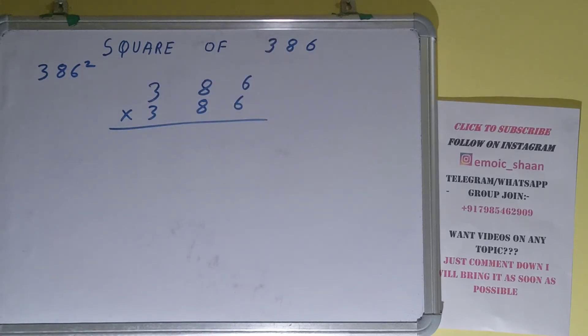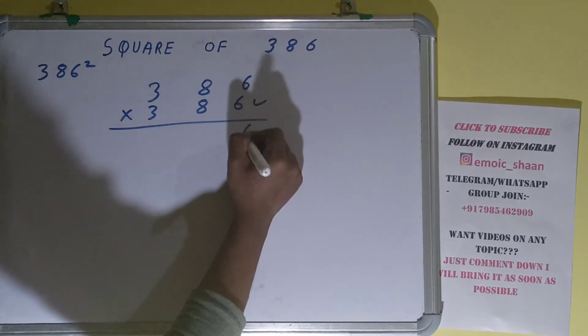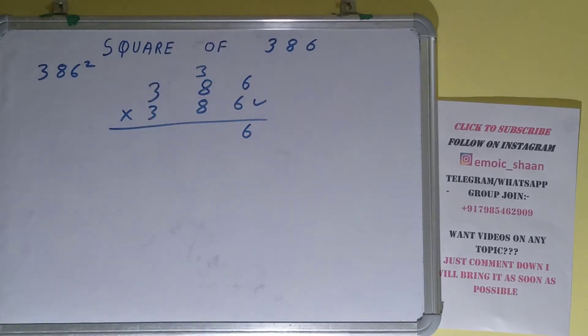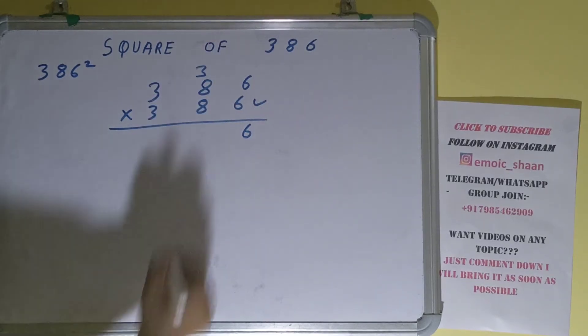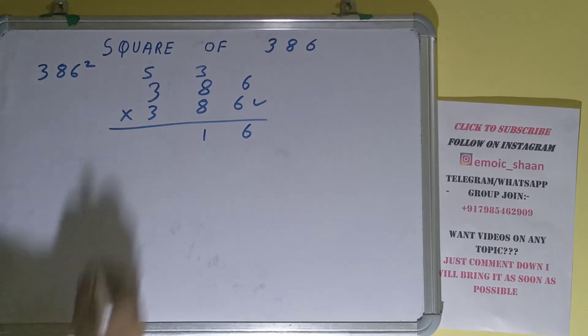6 times 6 is 36, 3 carry. 6 times 8 are 48 plus 3 is 51, 5 carry. 6 times 3 are 18 plus 5 is 23. All right.